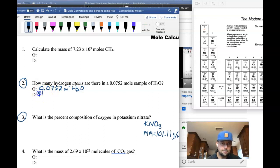So our given is 0.0752 moles of H2O. We're trying to find the number of H atoms. This one's a little bit tricky because we first have to find out how many molecules of water we have. So let's start in the same place, 0.0752, always start with our given moles of H2O.